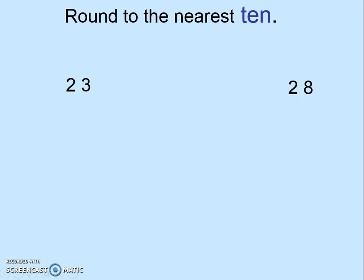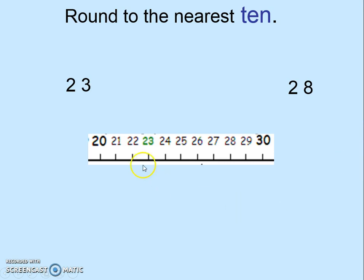We have to round these two numbers to the nearest 10. Nearest 10s are multiples of 10, like 10, 20, 30, 40, and so on. We can see from the number line that both of these numbers are between the multiples 20 and 30. But 23 is closer to 20, and so rounds down to 20. On the other hand, 28 is closer to 30, and so rounds up to 30.